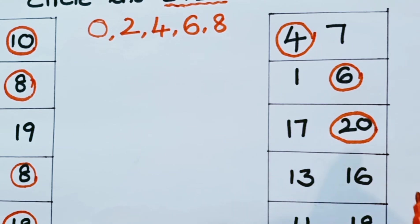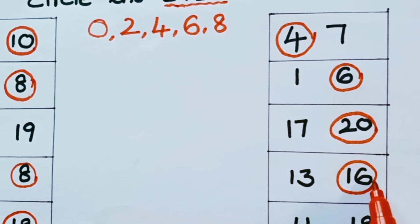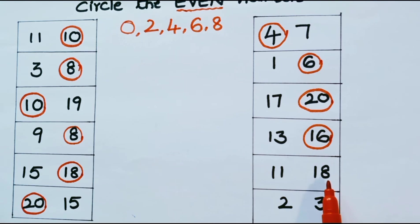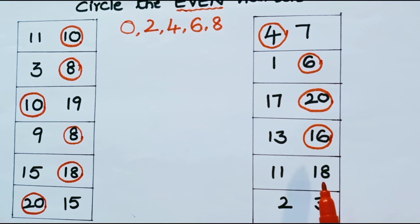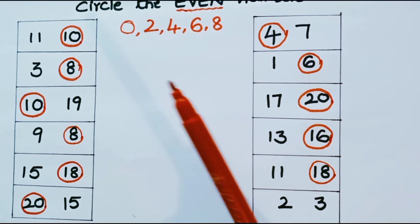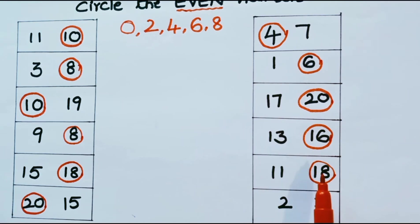What are the two numbers in the next row? 11 and 18. What is the even number? It is 18. Because 18 is ending with the number 8, and 8 is an even number. So 18 is also an even number.